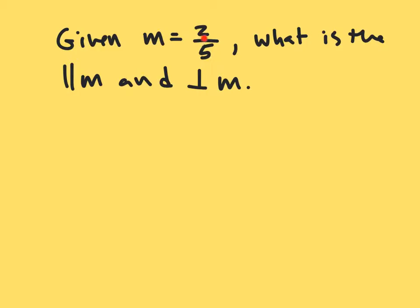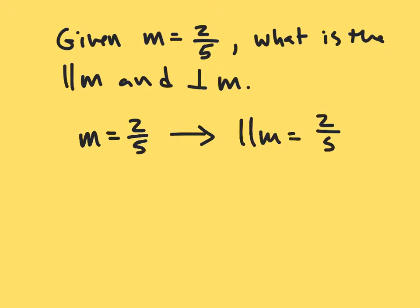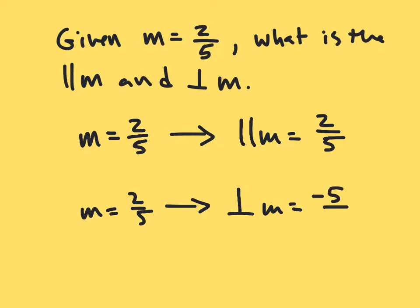Given a slope of two fifths, what is the parallel slope and the perpendicular slope? If m is equal to two fifths, then the parallel slope is simply two fifths. If the slope is two fifths and we're trying to find the perpendicular slope, we flip the fraction and change the sign, giving us negative five halves.